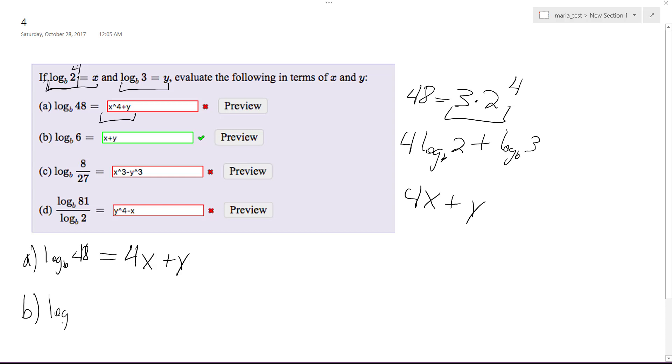B, log base b of 6 is equal to x plus y. When you add them together you multiply them so 3 times 2 which is equal to 6.